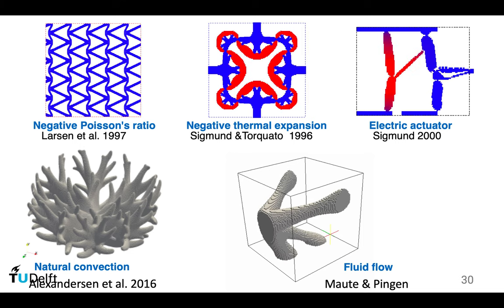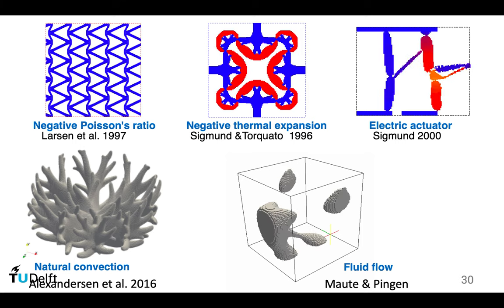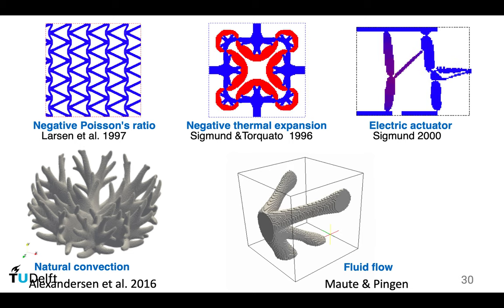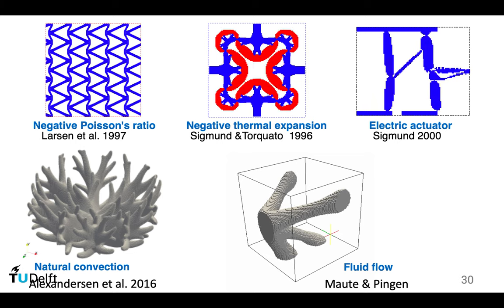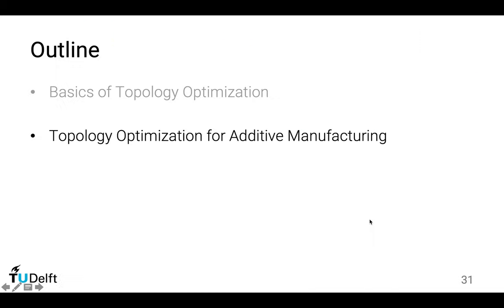In the design of many products, geometry influences performance regarding the physics, and if this is the case in your project you could consider topology optimization for automated design. This covers the basics of topology optimization. After the break we will particularly look into additive manufacturing, regarding its challenges and opportunities.